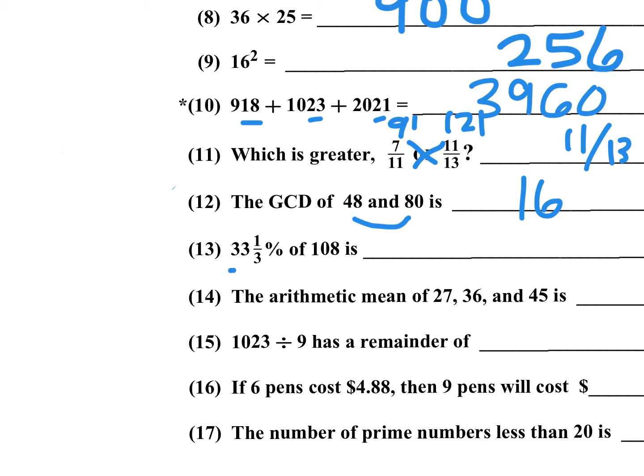33 and 1 third percent is exactly 1 third. So 1 third of 108, 108 divided by 3, is exactly 36.